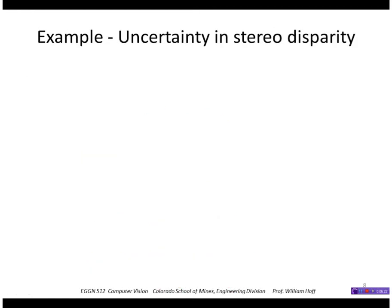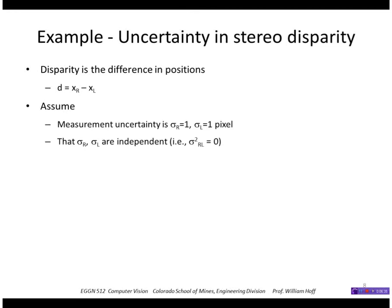Take an example, we looked at disparity. Stereo disparity recall was the difference in the x coordinate of the right and left images. So if those are two random variables, and say they're independent.